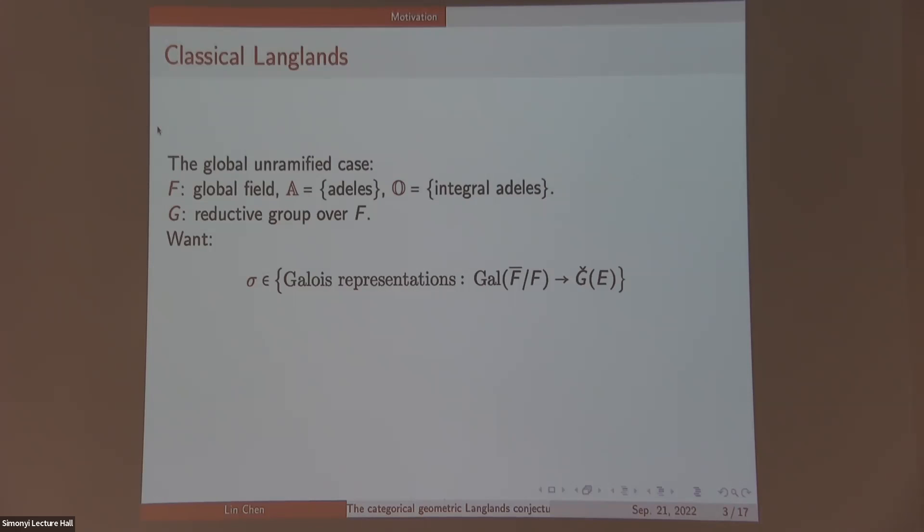You want to find an automorphic form called F-sigma. It's a certain function on the double quotient G_A quotient by G_F on the left and a compact open from the right, an E-valued function. Of course, this assignment should satisfy some properties. For instance, the L-functions should match and F-sigma should satisfy some Hecke-eigen properties and so on. I will not mention them.